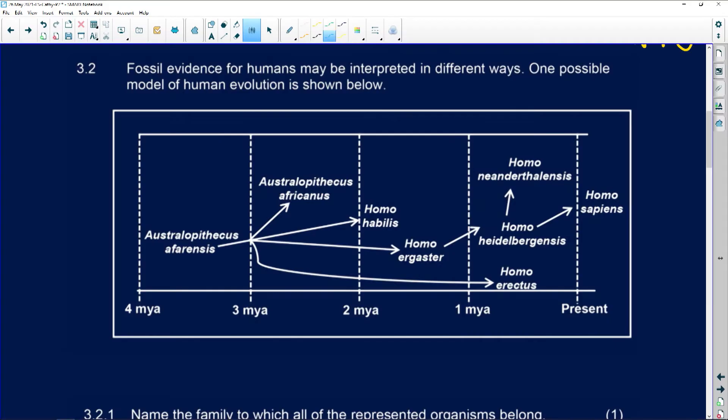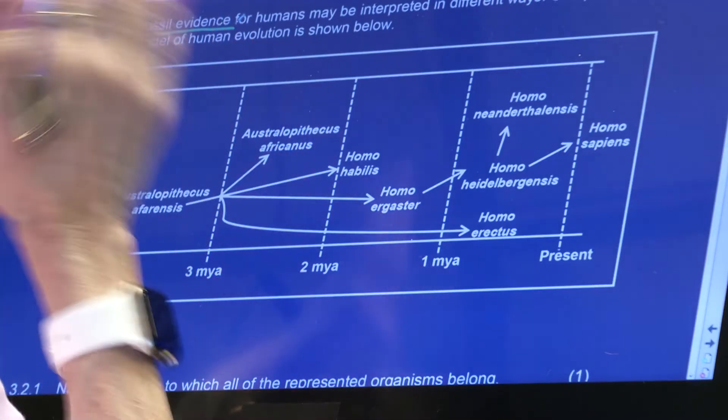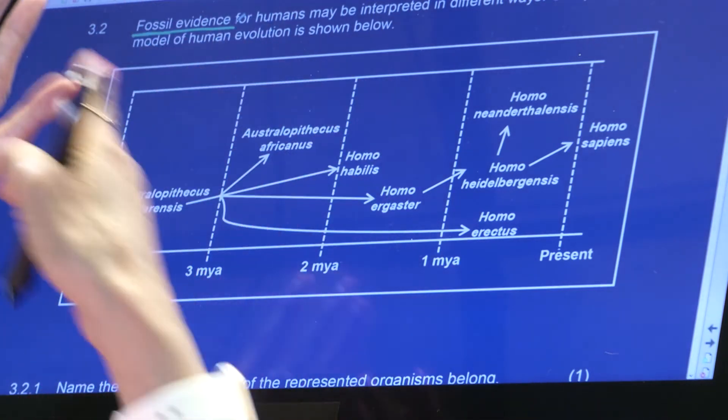Let's get another colour — let's go with green. Okay, fossil evidence. Now remember, we've got different types of evidence: you've got cultural evidence, you've got genetic evidence, you've got fossil evidence. They're all different types of evidence that point to the theory that evolution occurred.